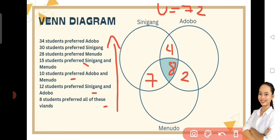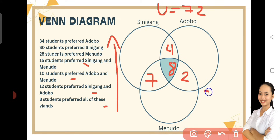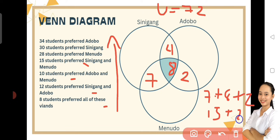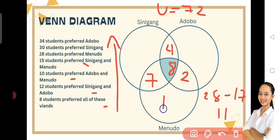At ngayon, proceed na tayo sa mismong Menudo. Yung lahat ng number na nasa loob ng bilog ng Menudo, ipag-a-add natin siyang lahat. So, 7 plus 8 plus 2 is equals to 17. Yung 17 naman, imaminus natin siya sa 28. So, 28 minus 17 is equals to 11. So, 11 yung students na may gusto sa Menudo.